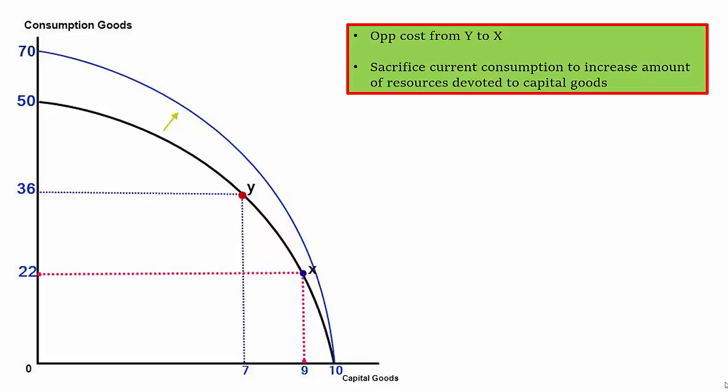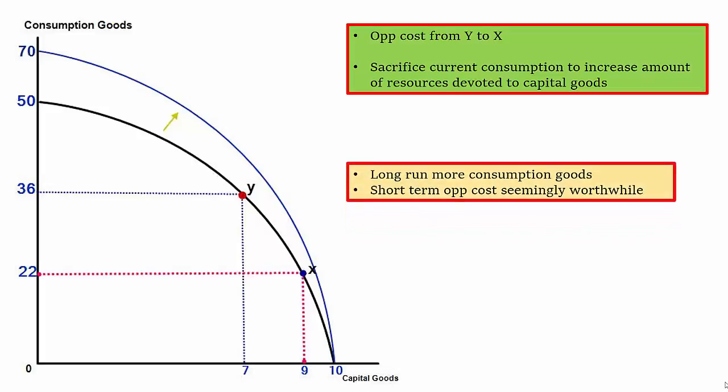So we see that we're sacrificing current consumption in order to reallocate our resources and devote more to capital good production in the short run. And what you'll see is that this will cause a shift outwards of the PPF which will enable us to have more consumption goods in the longer term. And the reason for that is because by reallocating our current resources to produce more machinery, it means in the long term there's going to be more machinery in order to produce more. So whilst it may seem that we sacrifice current consumption in the short run, it makes it worthwhile in the long run if there's a greater number of consumption goods available in the longer term.